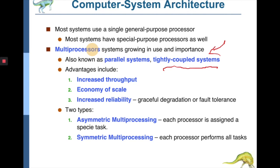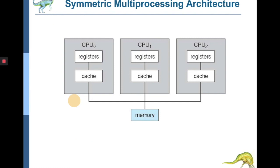There are two types of multiprocessing systems: asymmetric multiprocessing, where each processor is assigned a particular task, and symmetric multiprocessing, where each processor has equal assigned responsibility and performs all tasks. Based on this task mechanism and scheduling, we distinguish between multiprocessing architectures. Most modern operating systems are compatible with the symmetric multiprocessing environment.